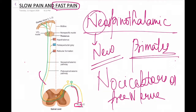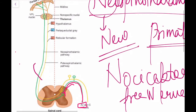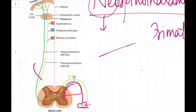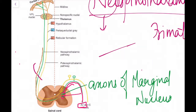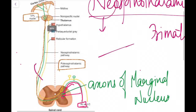The A-delta fibers, just like the C-fibers, enter the spinal cord via the dorsal root into the dorsal grey horn, and terminate in laminae 2 and 4. They synapse with second-order neurons arising from the axons of the marginal nucleus. These fibers also cross to the opposite side and ascend in the lateral white funiculus, but unlike the paleospinothalamic pathway, they do not give rise to collaterals.